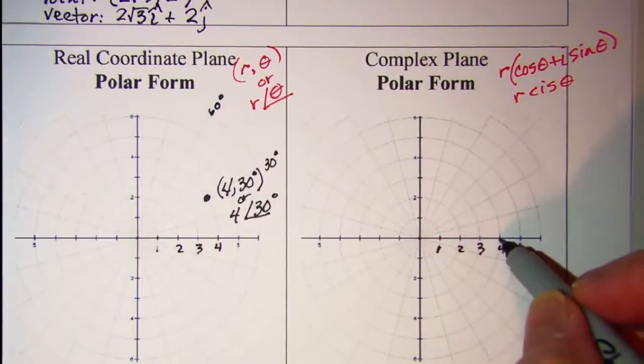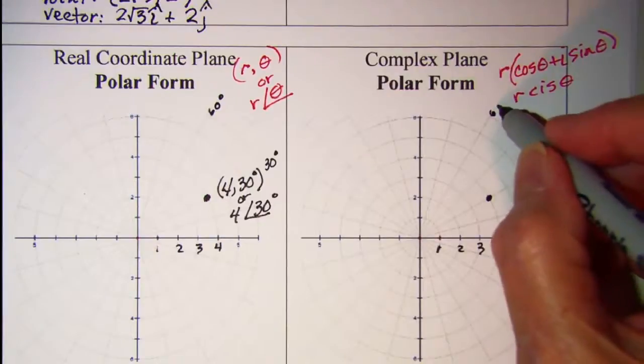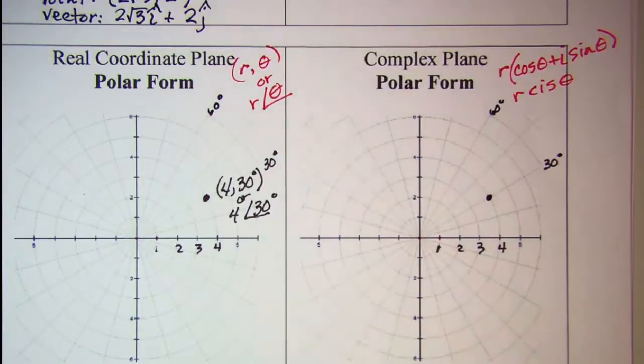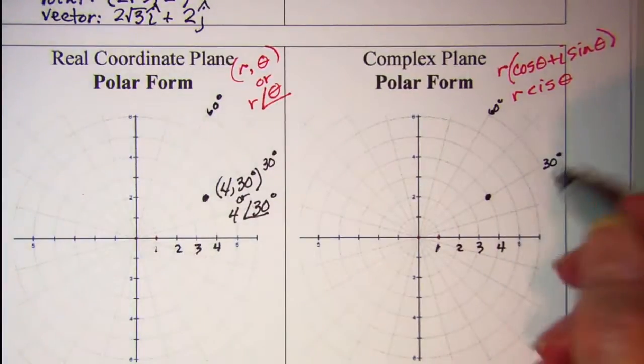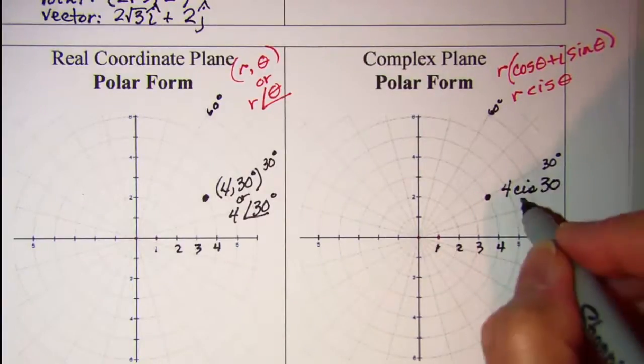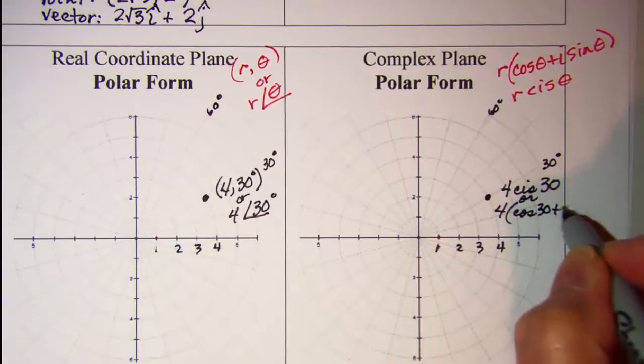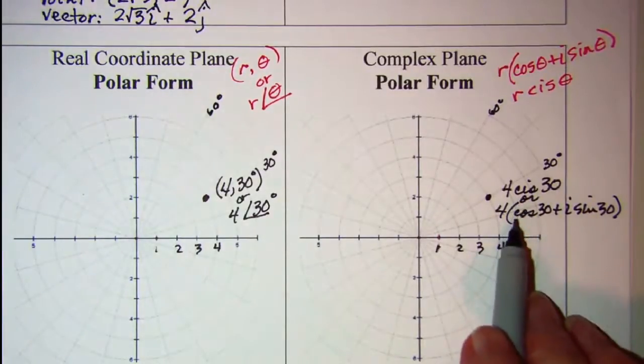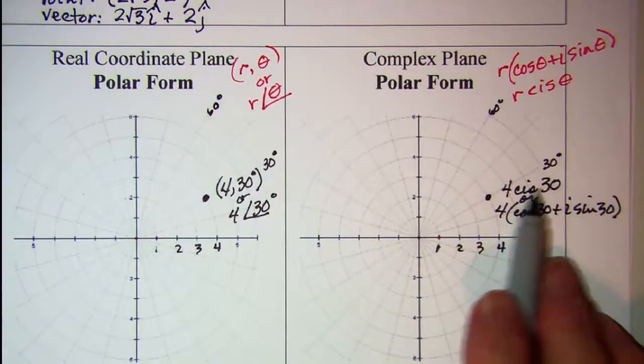We want to go 4 units out and then 30 degrees, it will be right here. It might be in degrees or it might be in radians. But our point now, if we're indicating a complex number, we would write this as 4 cis 30°, or you may see it as 4 times the cosine of 30° plus i times the sine of 30°. So for the short notation we take this C and then the imaginary i and then the S, and that's where that comes from.